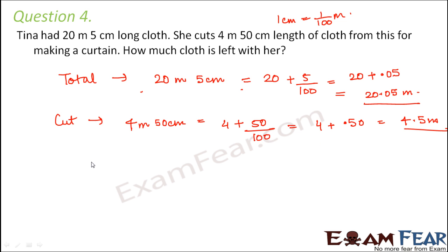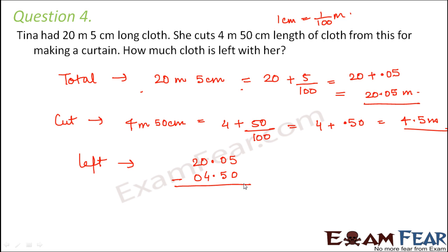To find how much cloth is left, we calculate total minus the cut: 20.05 minus 4.5. We can write 4.5 as 4.50 by placing a zero, then subtract starting from the rightmost column. 5 minus 0 is 0. In the next column, the top digit is 0, so we borrow 1.